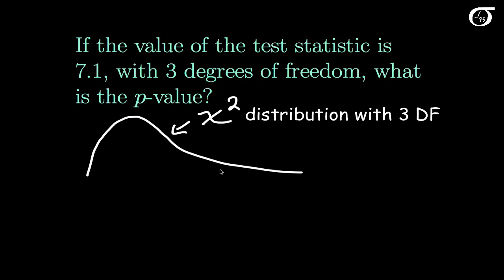The value of our test statistic is 7.1, and the p-value is simply the area to the right of that test statistic. That is the p-value.